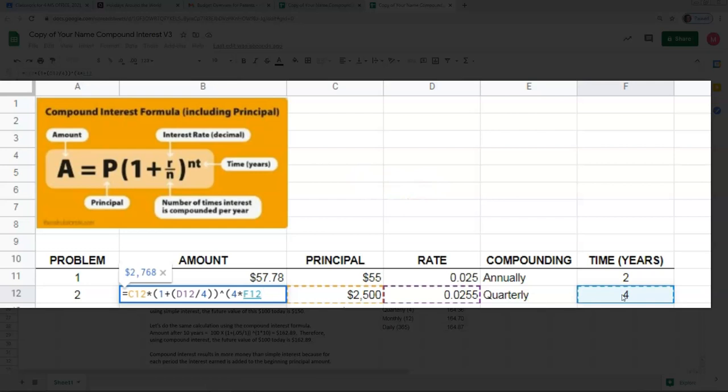Over here in column F12, cell F12. And I'll increase the decimal places there.